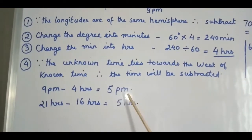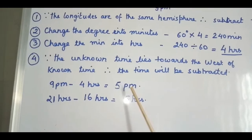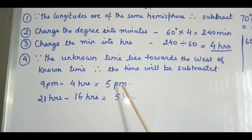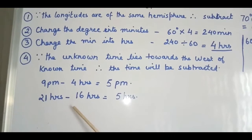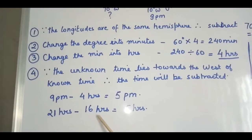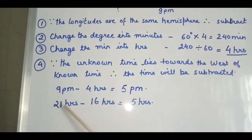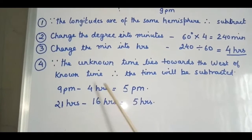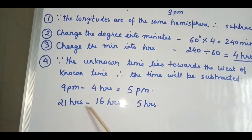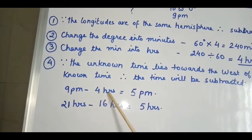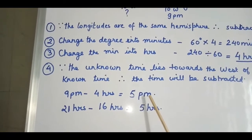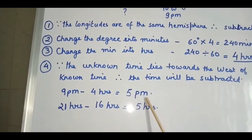As mentioned earlier, afternoon times can be written in 24-hour format — 9 PM is 21 hours. So 21 hours minus 16 hours (which is 4 hours ahead of 12) also gives 5 hours, confirming the answer is 5 PM.